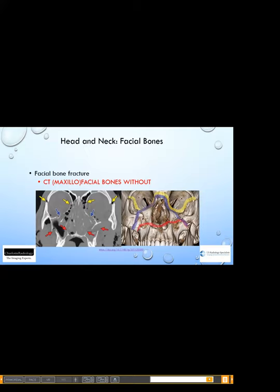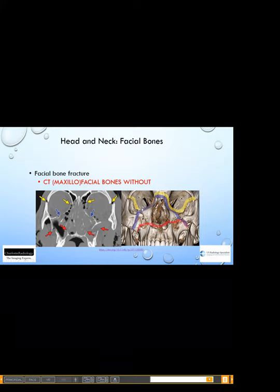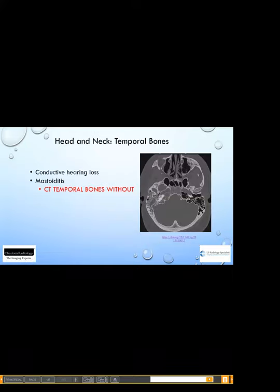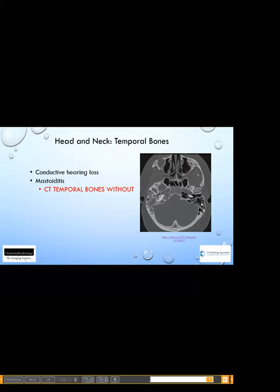For special cases: facial bone fractures don't need contrast — a CT of the facial bones without contrast works well, and we can do 3D reconstructions as shown. If a patient has conductive hearing loss or mastoiditis, we do a CT of the temporal bones without contrast. The image nicely shows that on the left side of the head, the mastoid air cells are filled with air, while on the right they are filled with gray fluid and mucus — that is mastoiditis.